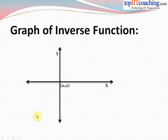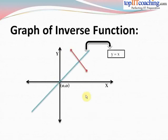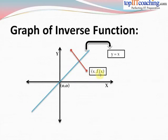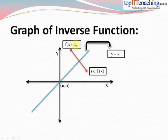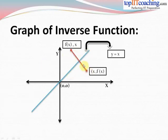Now let's understand how to draw the graph of an inverse function. On the coordinate plane with the x and y axes, consider the line y = x. Any point on the graph of y = f(x) can be written as (x, f(x)). The corresponding point on f inverse is (f(x), x). The line segment joining the points (x, f(x)) and (f(x), x) is bisected at right angles by the line y = x, which acts as the axis of reflection.